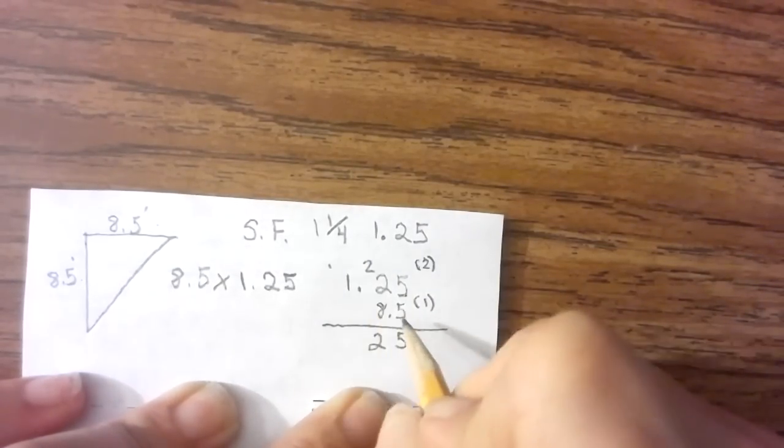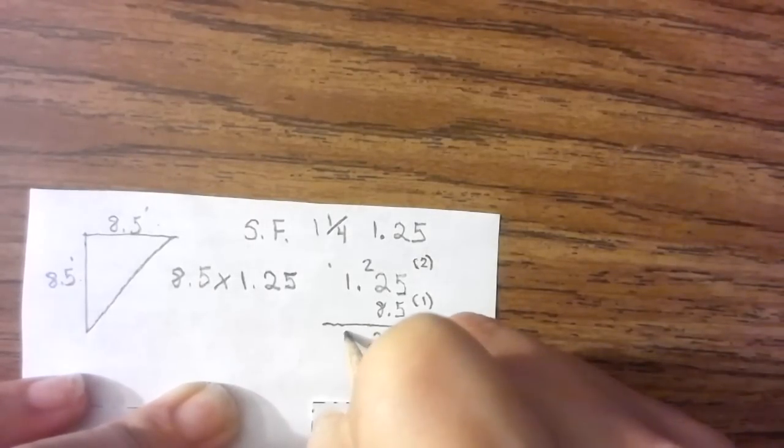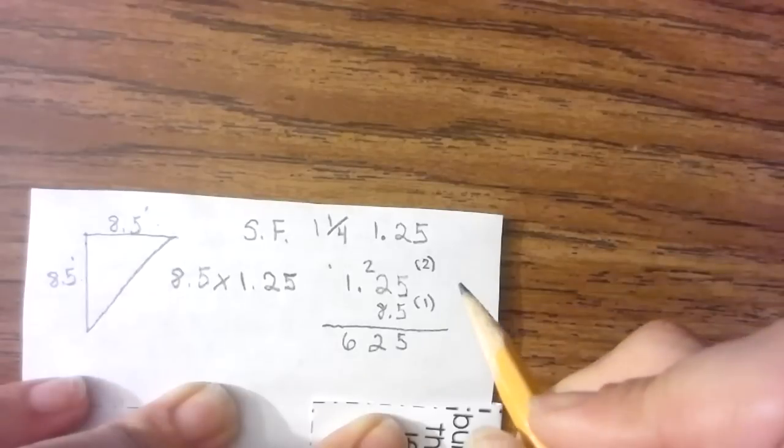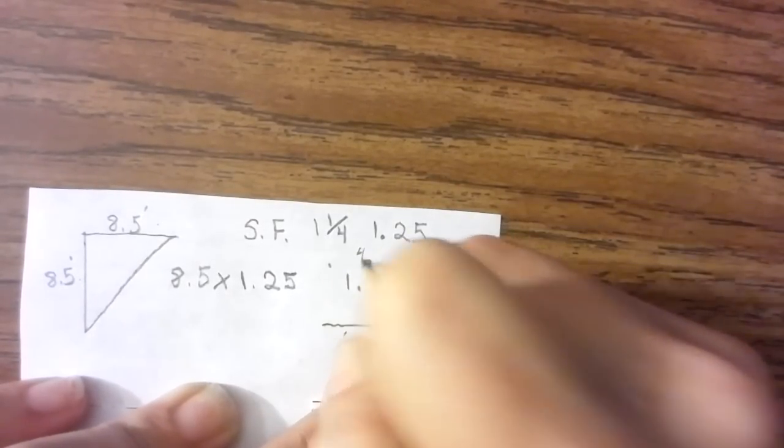5 times 1 is 5 plus 1 is 6. 8 times 5 is 40.